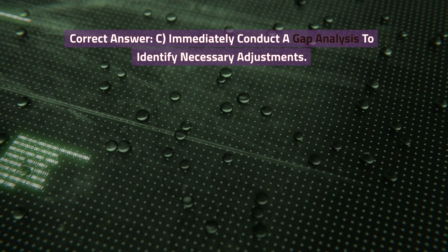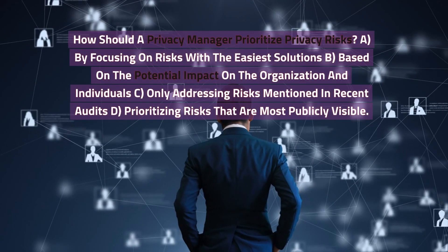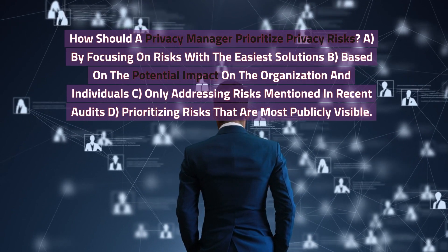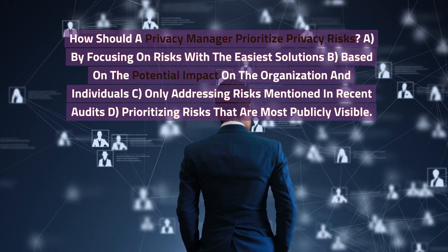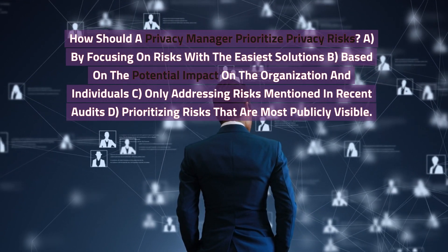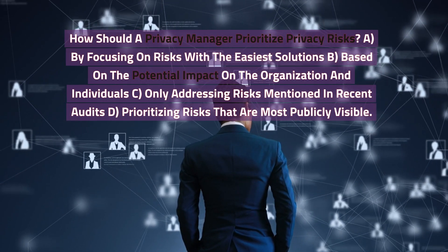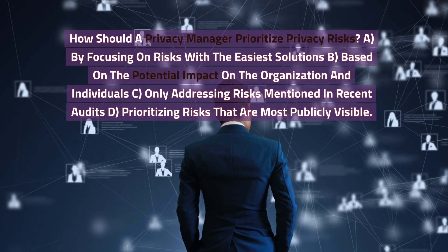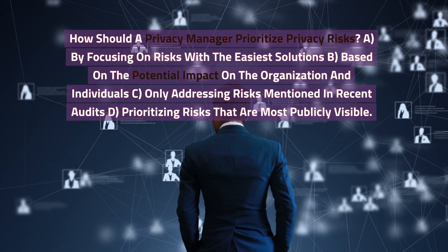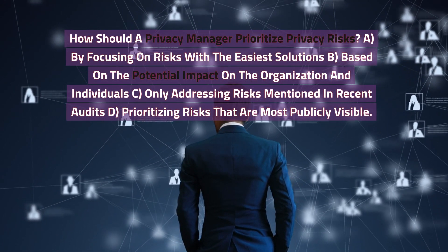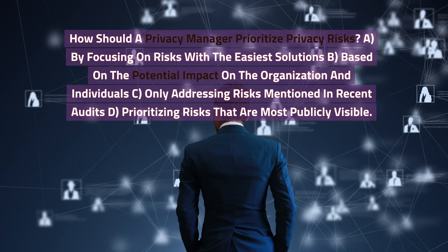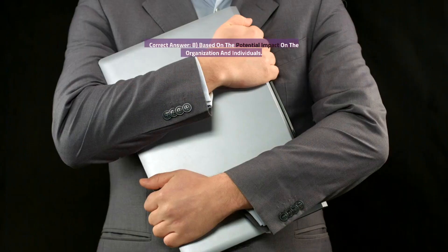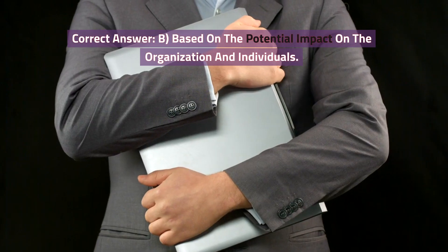How should a privacy manager prioritize privacy risks? A. By focusing on risks with the easiest solutions. B. Based on the potential impact on the organization and individuals. C. Only addressing risks mentioned in recent audits. D. Prioritizing risks that are most publicly visible. Correct answer: B. Based on the potential impact on the organization and individuals.